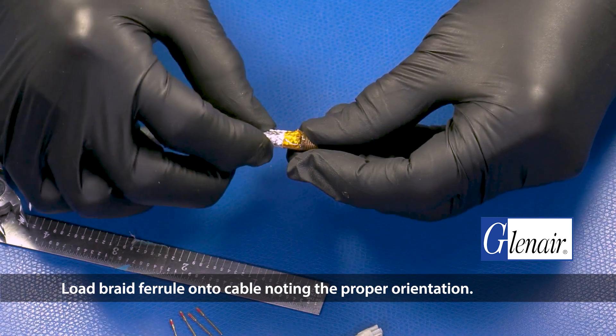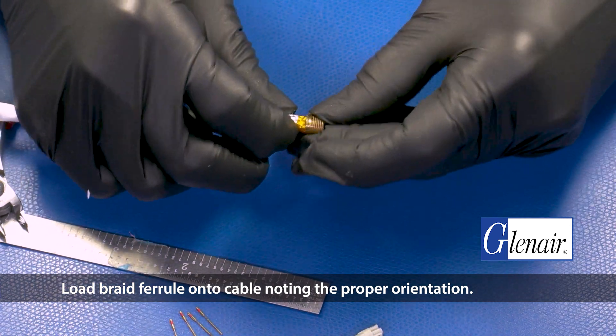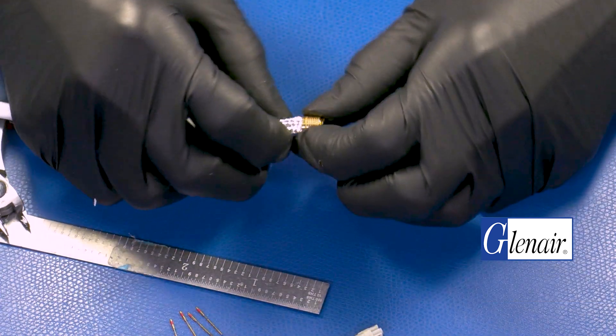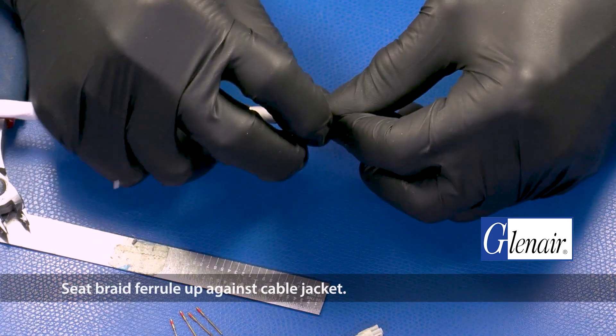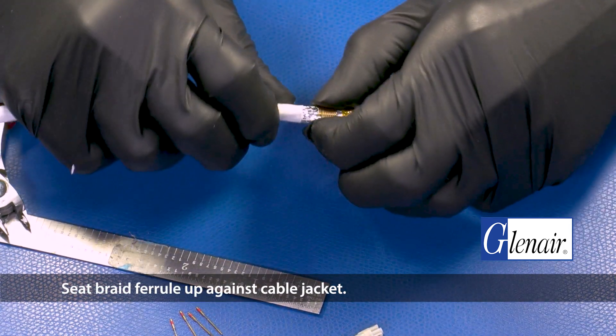Load braid ferrule onto cable, noting the proper orientation. Seat braid ferrule up against cable jacket.